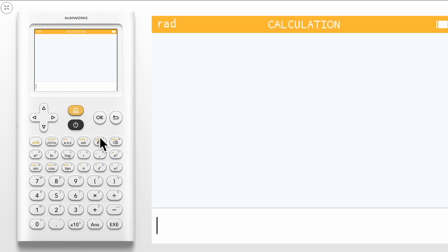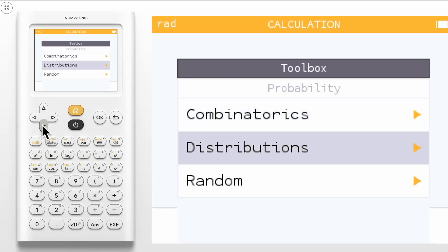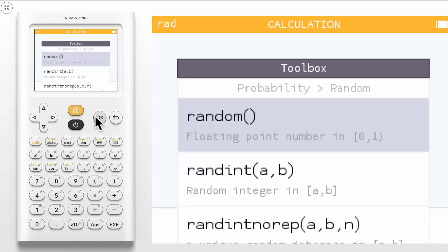You can find our three random number generators within the toolbox, under probability, and then random. The first option will choose a random value between 0 and 1.